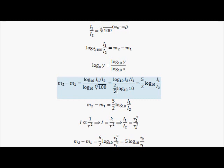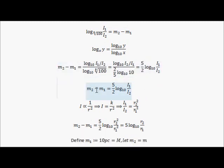We're dividing by 2 over 5, so I'm going to put that on the numerator by inversing it, so we end up with 5 over 2. So in summary, m2 minus m1 equals 5 over 2 log 10 of i1 over i2.